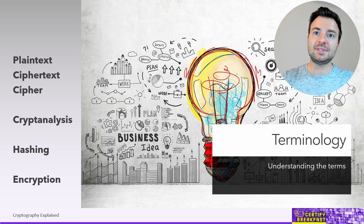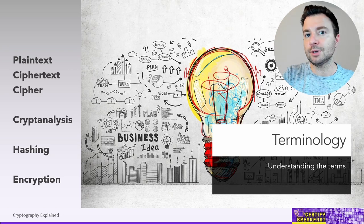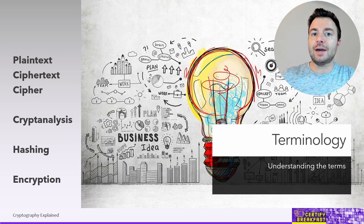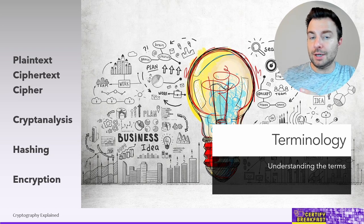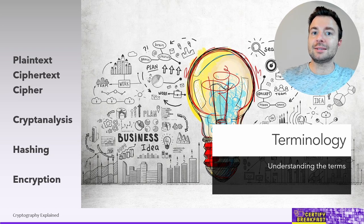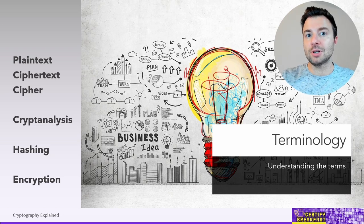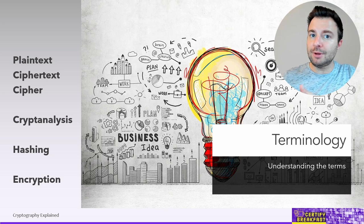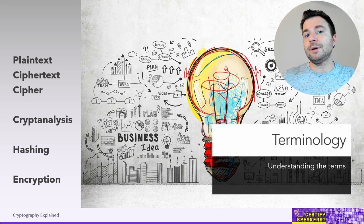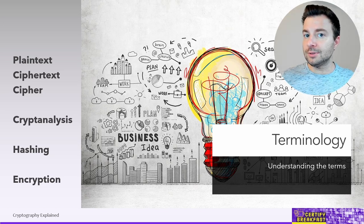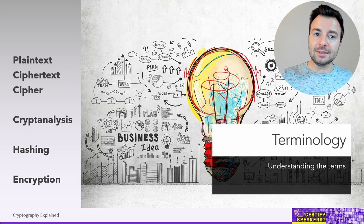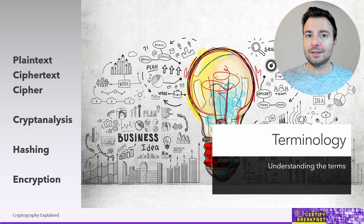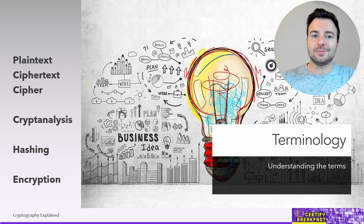Encryption, on the other hand, receives any kind of input and produces a variable-length output to represent the encrypted version of that same input data. Encryption can be reversed depending on the algorithm and depending on what keys were used — a discussion we'll have in the following minutes.